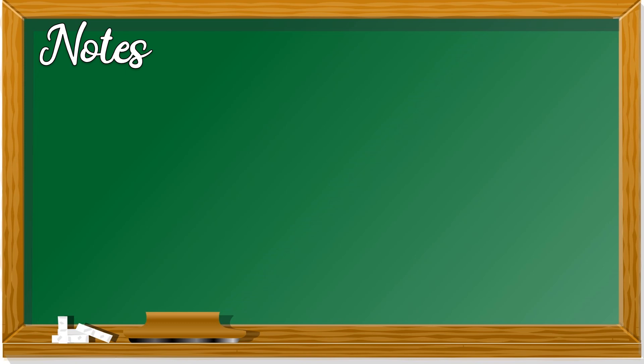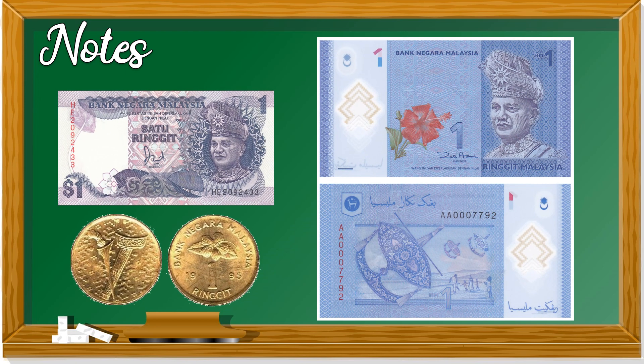Notes are money in terms like a paper. This is an old one ringgit note - nota wang satu ringgit Malaysia yang dahulu. And these are coins, one ringgit coins. Now, it's very hard to find these two.